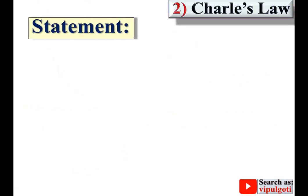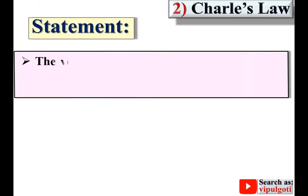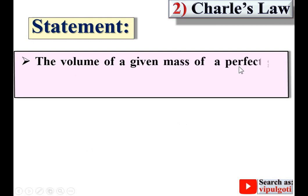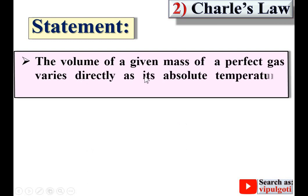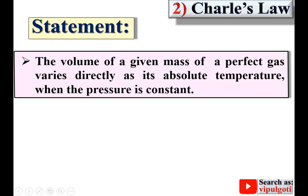Now the next one: Charles' law. Statement: the volume of a given mass of a perfect gas varies directly as its absolute temperature when the pressure is constant. You have to remember that in Charles' law, pressure is constant, whereas in Boyle's law, temperature was constant.